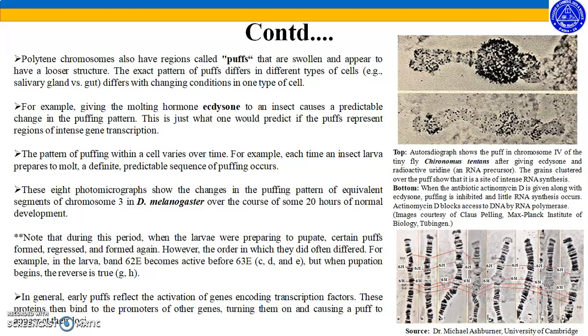The pattern of puffing within a cell varies over time. Each time an insect larva prepares to molt, a definite predictable sequence of puffing occurs. These eight photomicrographs show the change in puffing patterns of equivalent segments of chromosome 3 in Drosophila melanogaster over the course of about 20 hours of normal development. During this period, as larvae prepared to pupate, certain puffs formed, regressed, and formed again — though the order sometimes differed. For example, in the larva, band 62E becomes active before 63E, CD, and E, but when pupation begins the reverse is true. Early puffs reflect the activation of genes encoding transcription factors, which then bind to promoters of other genes, turning them on and causing puffs to appear at their loci.